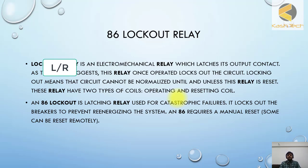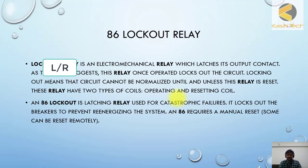Lockouts are operated when there is some severe fault. For example, in a protection zone, when a heavy fault occurs, the lockout operates and somebody has to come and reset it physically at the protection panel. After careful checking, the lockout can be reset and the breaker can be closed. When a lockout is operated, the breaker cannot be closed from local or remote.